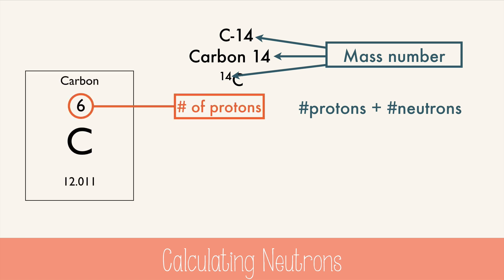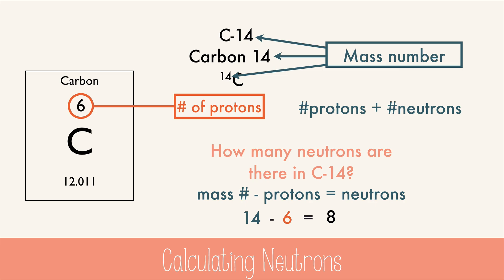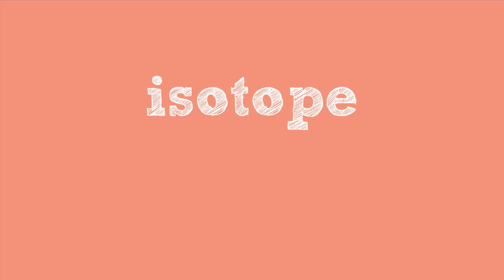So the question is, how many neutrons are there in C14? Take the mass number, subtract the atomic number, and you get 8. 8 neutrons in the sample of carbon 14, which also happens to be an isotope.